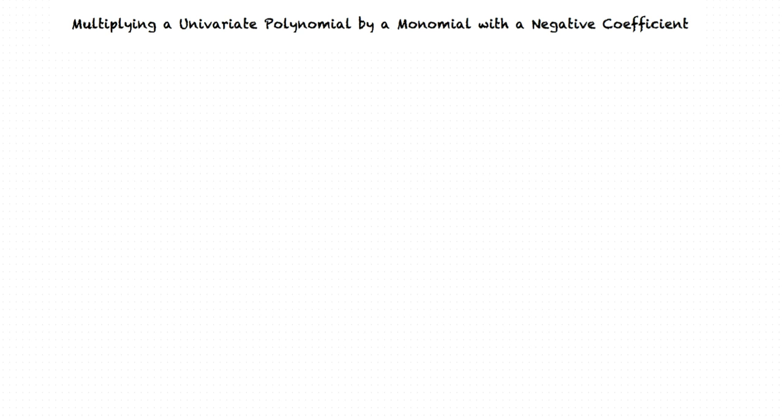This video will cover the topic multiplying a univariate polynomial by a monomial with a negative coefficient. Could you explain the different terms present in the topic? Sure.